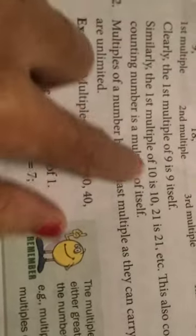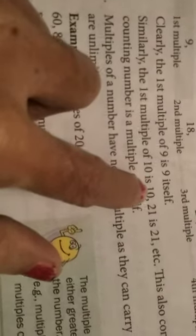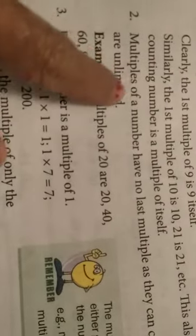So, 1 into anything: 1 into 10 is 10, 1 into 21 is 21. The number itself. Multiple is the number itself.